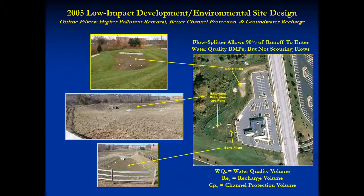Around 2005, we started seeing LID and ESD with its smaller, highly effective BMPs spread throughout the development project, usually in places that would have been landscaped otherwise. They're placed at the edge of parking lots or at roof downspouts, so they're before the pipe. This approach mimics forest conditions and has the potential to allow development with very little aquatic resource impact.